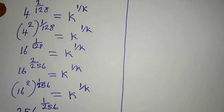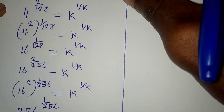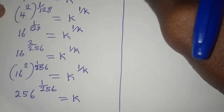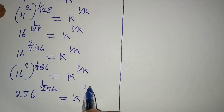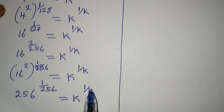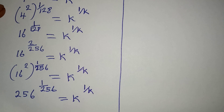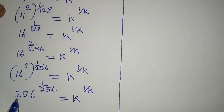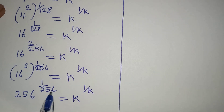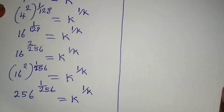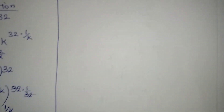Equal to k to the power of 1 over k. And this is the point we have been looking for. We now have the same number 256 in both the base and the exponent on the left side, matching k to the power of 1 over k on the right.